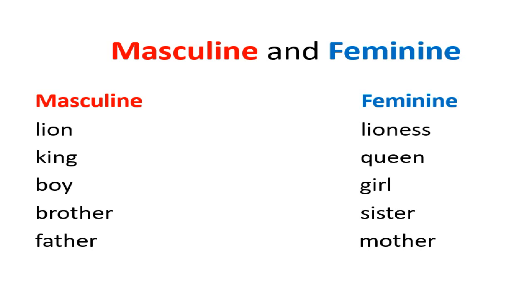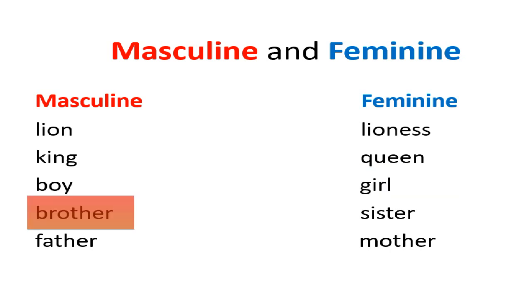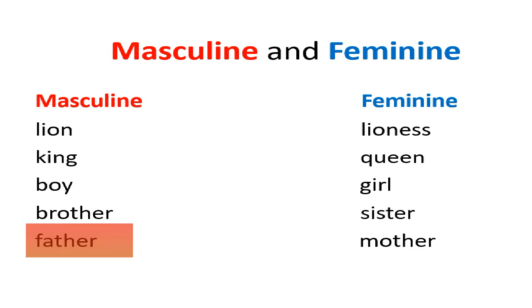Look at the next: boy is a masculine noun and its feminine noun is girl. Next is brother — brother is a masculine noun and its feminine noun is sister. Then comes father, and its feminine noun is mother.